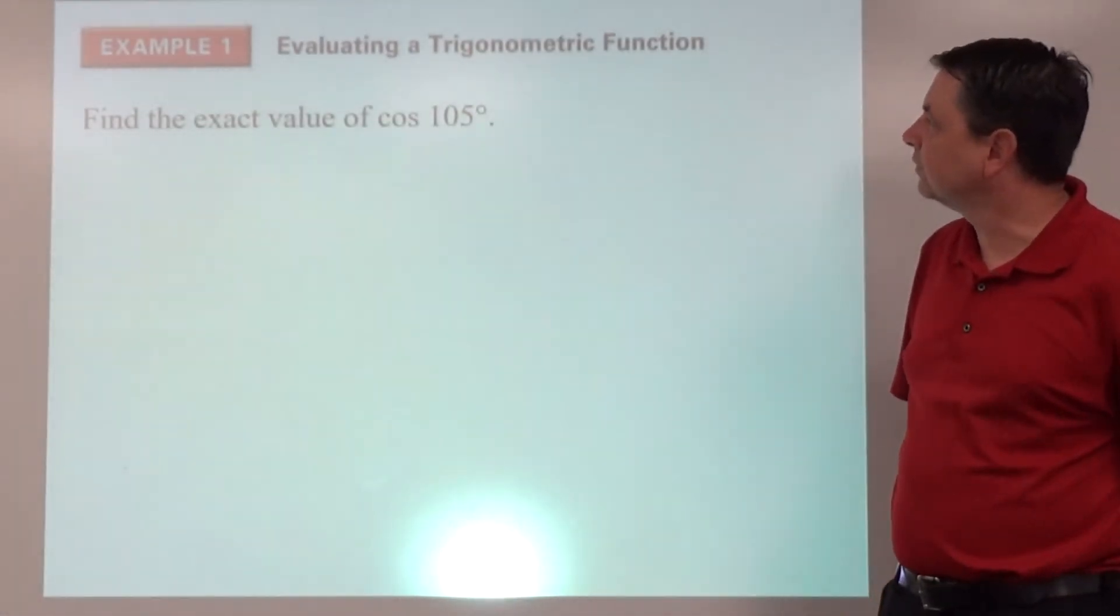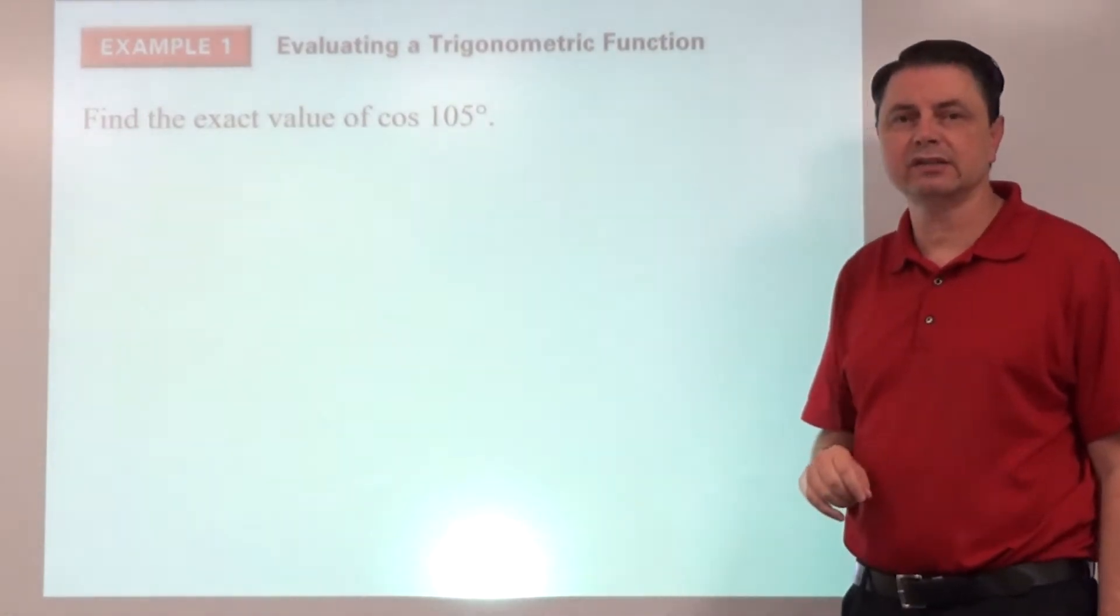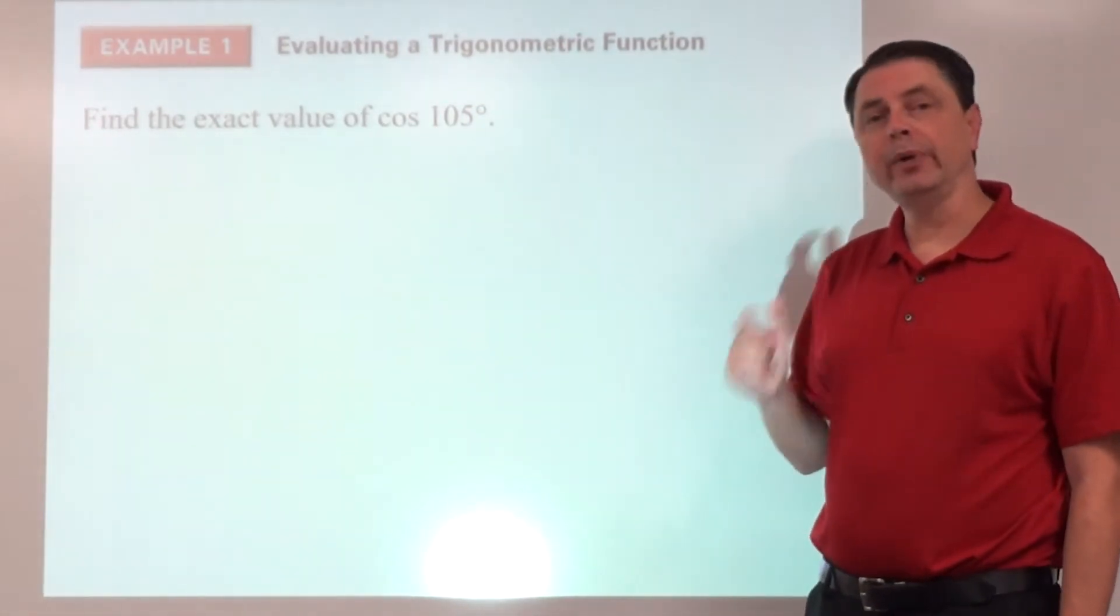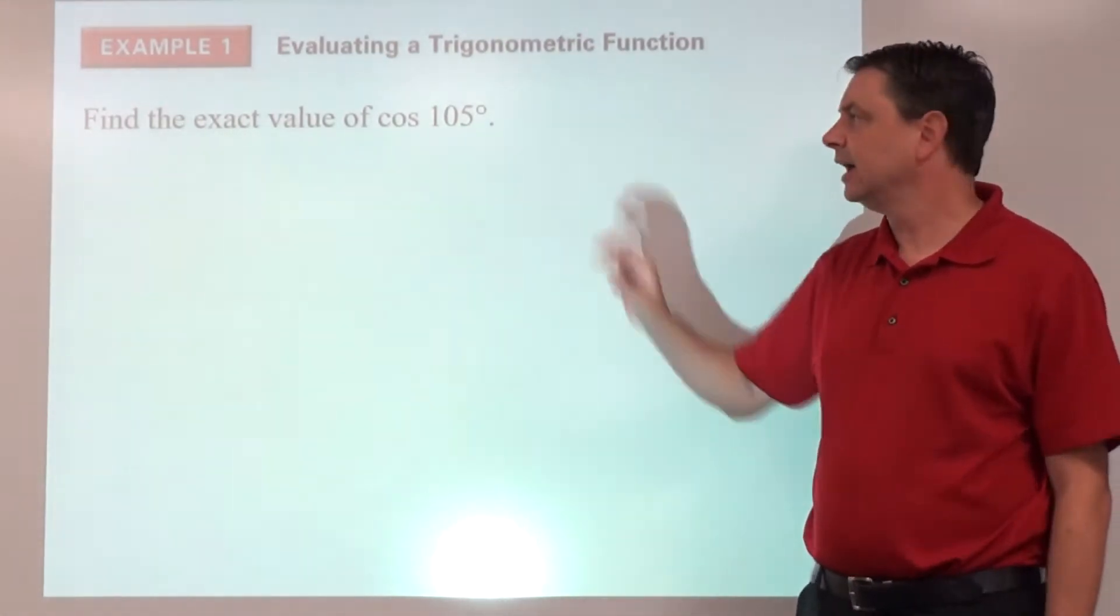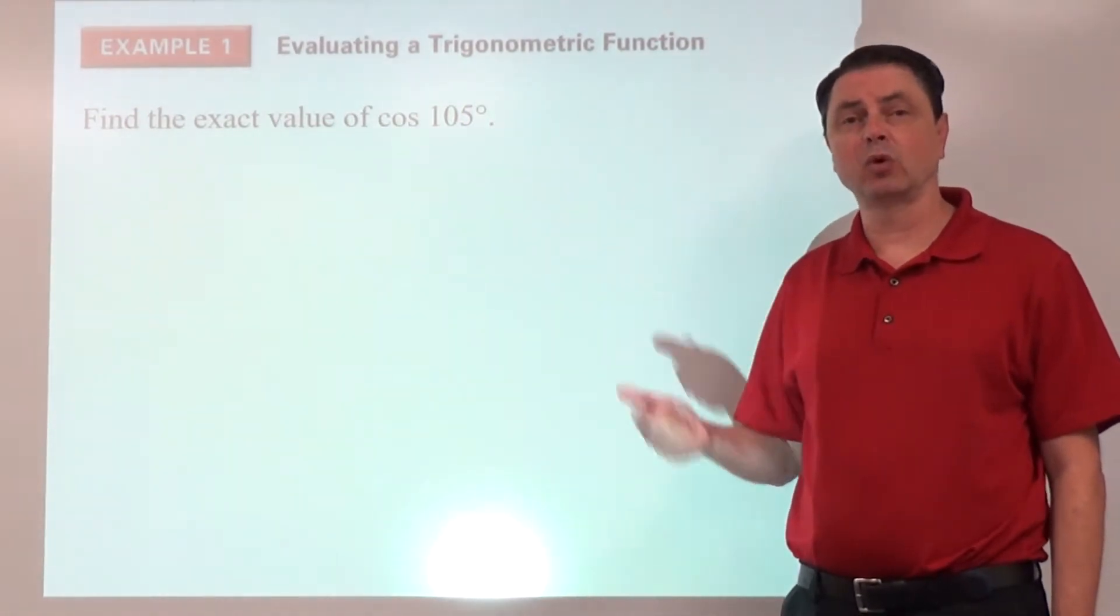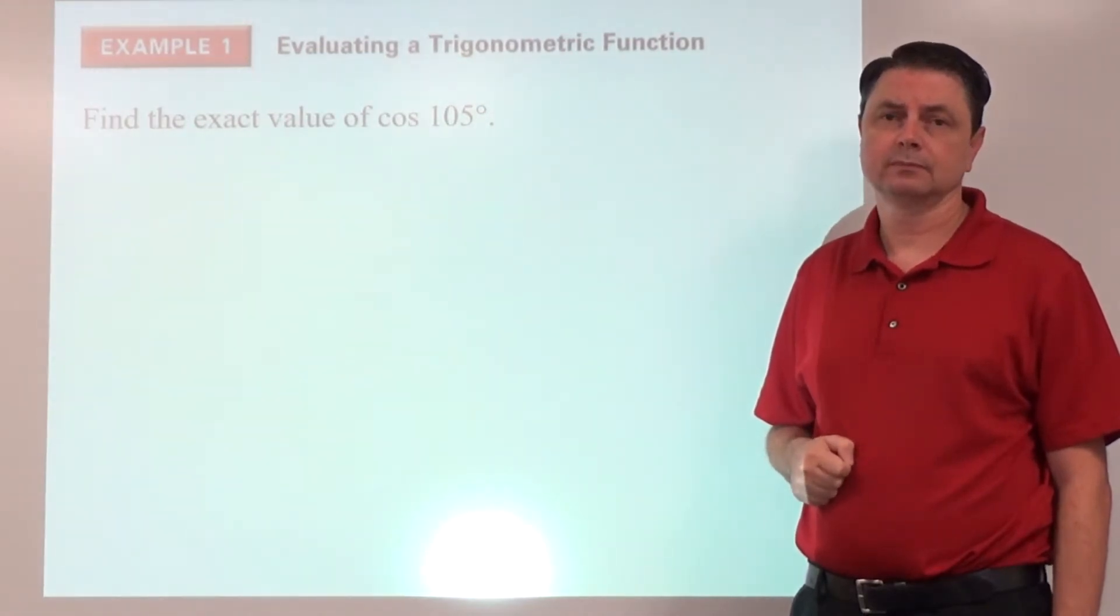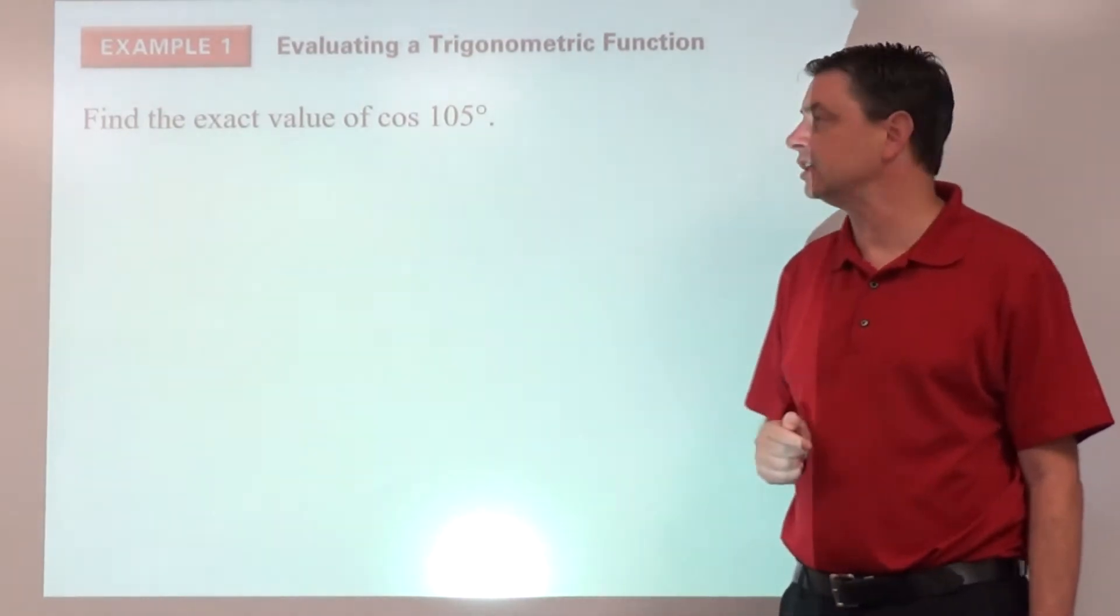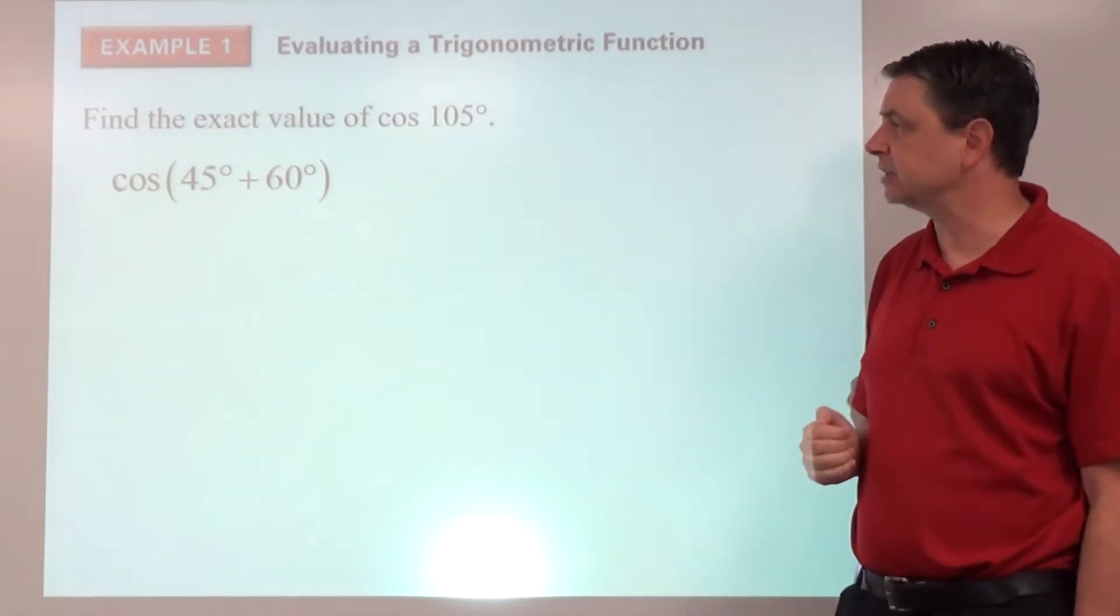Example one, we're going to evaluate a trigonometric function. We're going to find the cosine of 105 degrees. And that's not one of our unit circle angles, but it is a combination of a couple of our unit circle angles. So go ahead and pause here. Just kind of consider how do we create 105 degrees as a sum or difference of angles that we are very comfortable with. Probably the easiest way for us to go is that being 45 degrees plus 60 degrees. So we've got the cosine of the sum, 45 degrees plus 60 degrees.